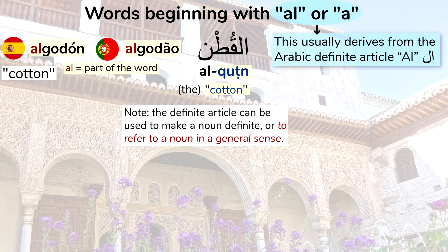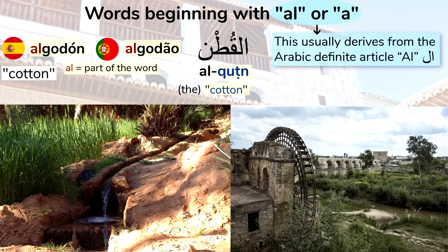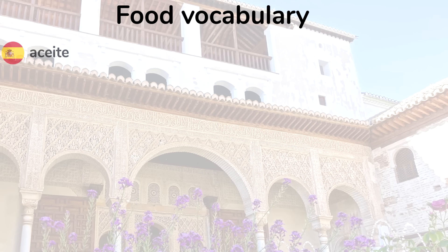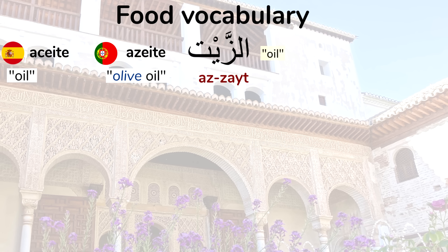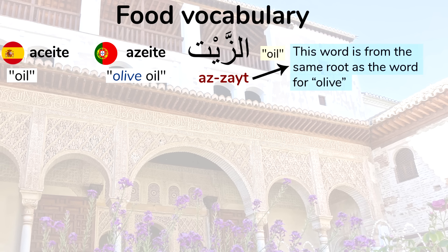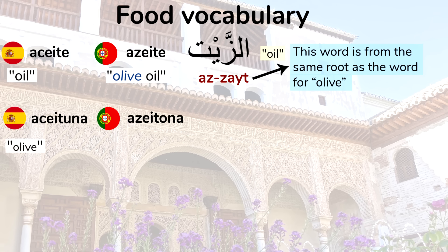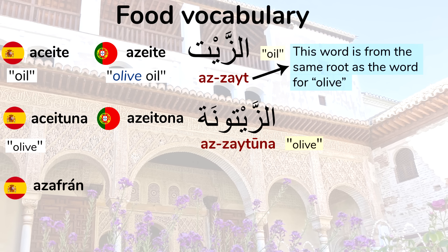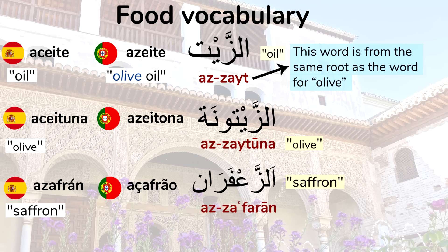This word is of course related to agriculture. The Moors had a significant impact on agriculture and cuisine on the Iberian Peninsula. This influence is reflected in vocabulary related to food. Meaning 'oil' — there's also a Portuguese equivalent which means olive oil specifically, from the Arabic word meaning 'oil.' This Arabic word comes from the same root as the word for olive, the obvious connection being olive oil. Meaning 'saffron,' a kind of spice, and in Portuguese — this comes from Arabic, which means saffron.